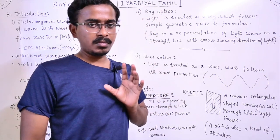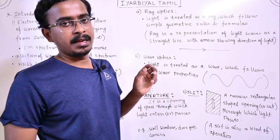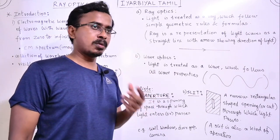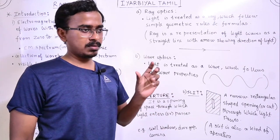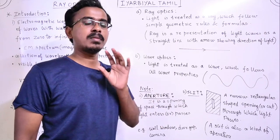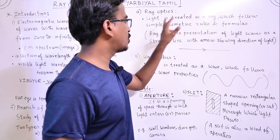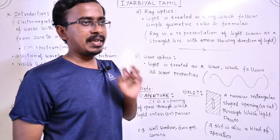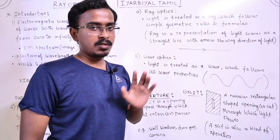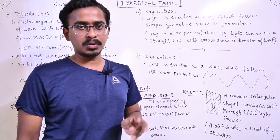In Ray Optics, light is treated as a ray. The ray follows simple geometric rules and formulas. So in ray optics, we use simple geometric formulas applied to rays of light. This makes it straightforward to study using geometry.